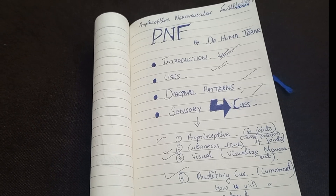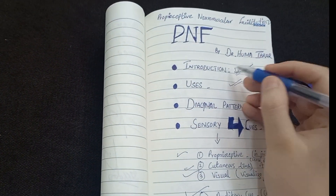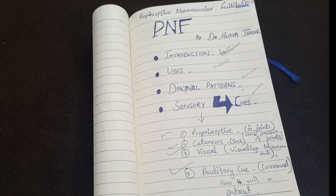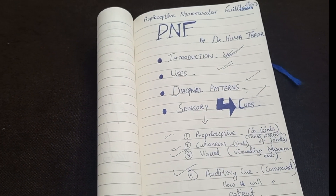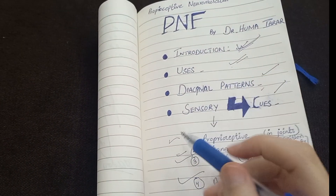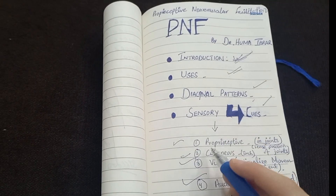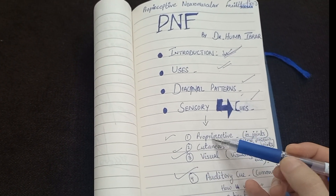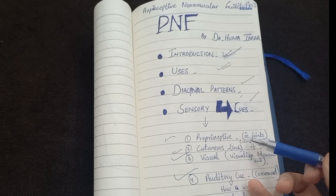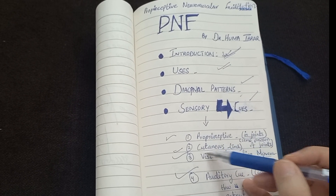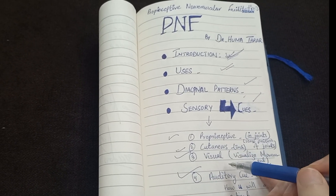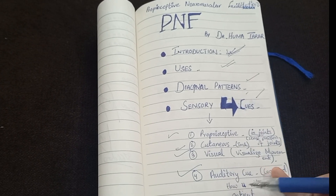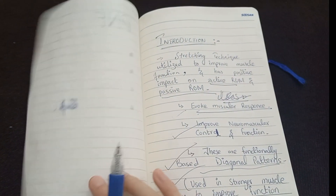First I will take an overview of introduction, uses, diagonal patterns, and sensory cues. Let's talk about the sensory cues. There are four sensory cues: proprioceptive — in joints to sense position; cutaneous — for touch; visual — for visualized movements; and auditory — for commands, that is how you command your patient.